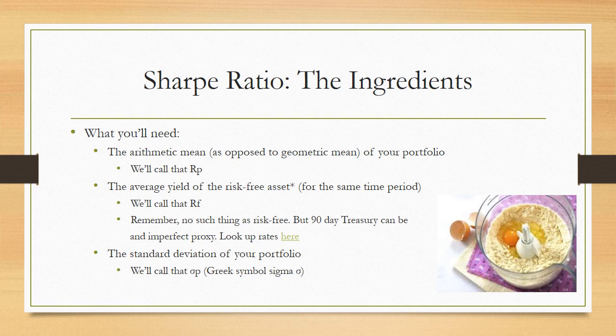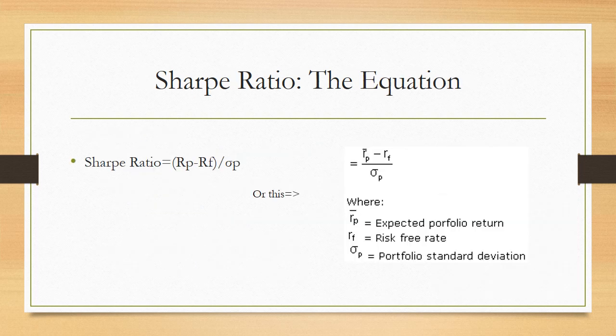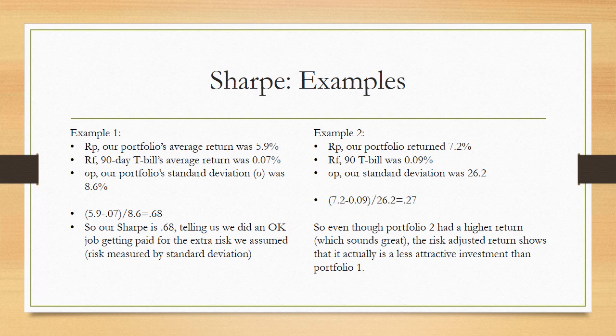Once you have those three figures, here's what we do: take the return of the portfolio, subtract the return of the risk-free asset, then divide all that by the standard deviation. The equation: (Portfolio Return − Risk-Free Return) ÷ Standard Deviation. For example, let's say our portfolio averaged 5.9%, the risk-free 90-day Treasury bill averaged 0.07%, and our standard deviation was 8.6%. Plugging those in gives us a Sharpe Ratio of 0.68 — meaning we did a reasonably good job getting paid for the risk we were assuming.